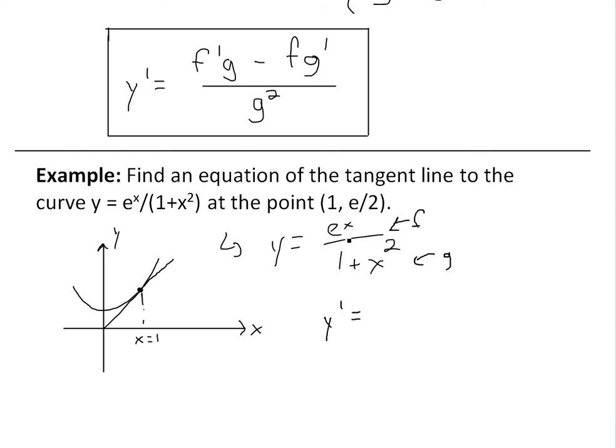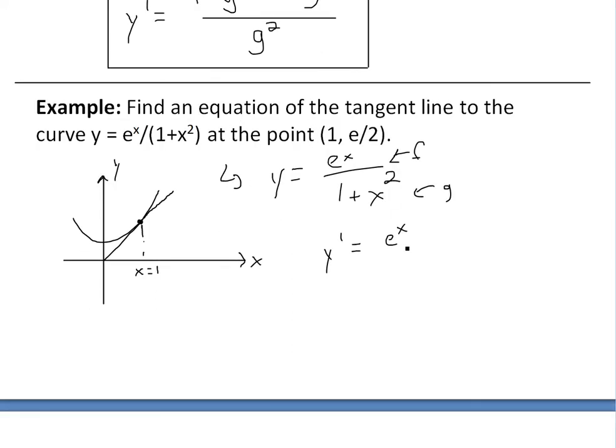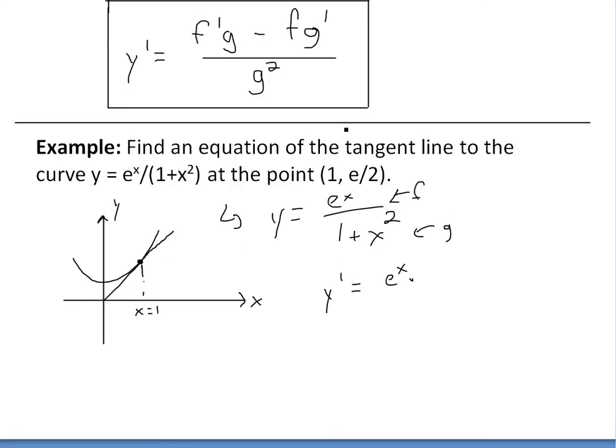So y prime is going to be equal to, well, the derivative of the top, which is f prime here. So e to the x, derivative of e to the x is just e to the x. And basically, so that's e to the x, and then we times it by the bottom, which is g, 1 plus x squared. And then subtract this by e to the x, which is just the top, and then times the derivative of this, the bottom right here, which is, well, the derivative of 1 is 0, the derivative of x squared is just 2x right here.